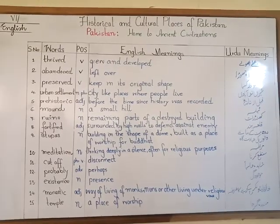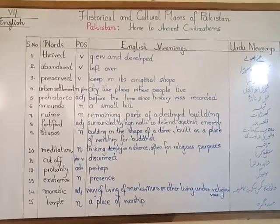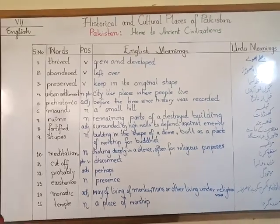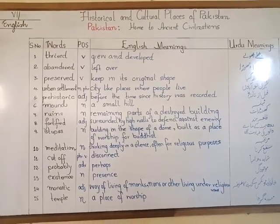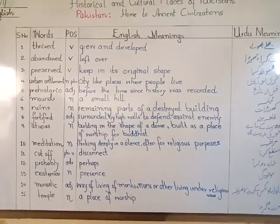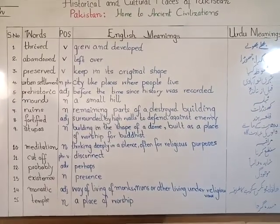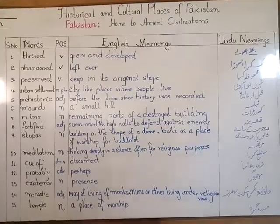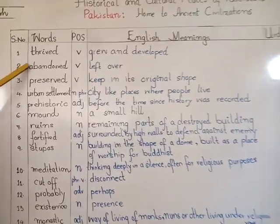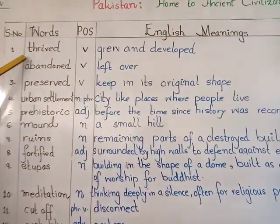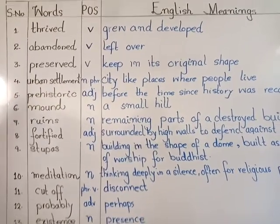Today's task is to do word spinning of Unit Number Five. As you can see, I have written fifteen words on the board for your ease, along with their meanings and Urdu meanings. The first ten words are from your book in Exercise Number Two.